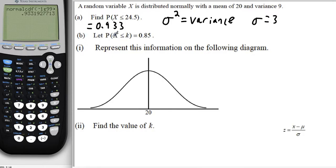Part B. Let P, the probability that X is less than or equal to K, equal 0.85. Represent this information on the following diagram.